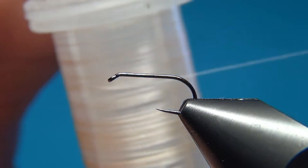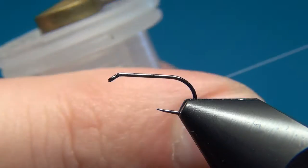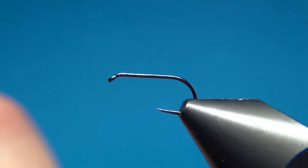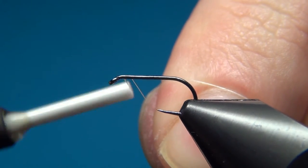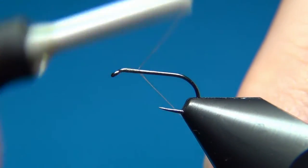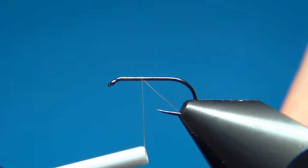The thread I'm using is the NanoSilk from Semperfly. This one is 18-0 and it's really nice for all these small flies where you don't want to build up any bulk and to have a thin and light body.